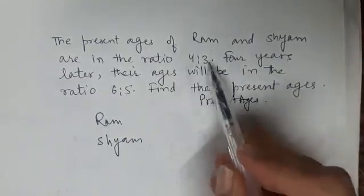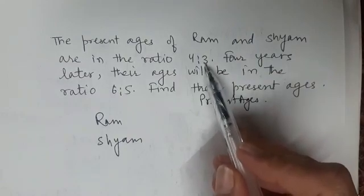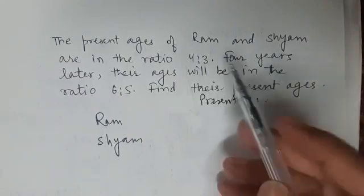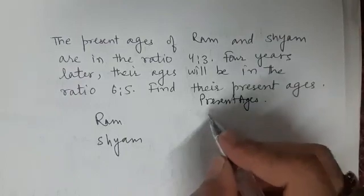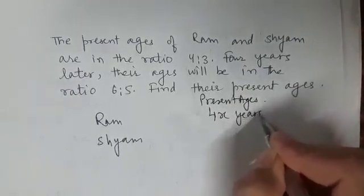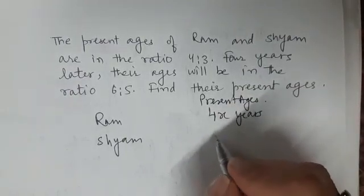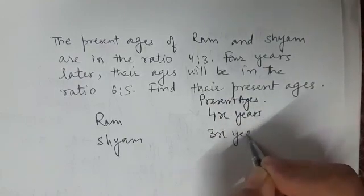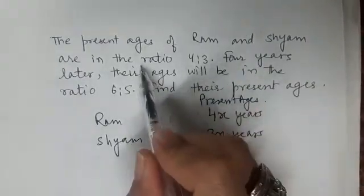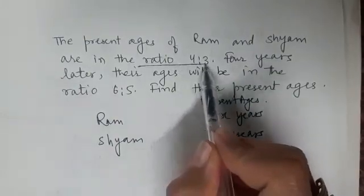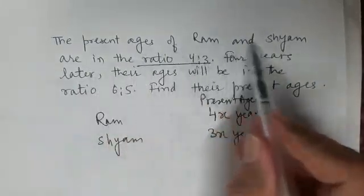Their ratio is 4 is to 3. So what we can assume is that the common factor be x, so Ram's age will be 4x years and Sham's age will be 3x years as per the question.